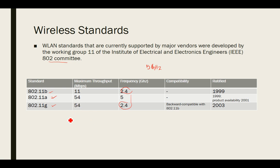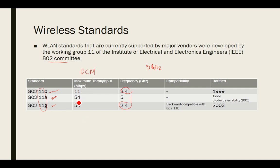The 802.11a standard suffers less from interference, but its use is restricted to almost line-of-sight, requiring installation of more access points than 802.11b to cover the same area. The medium access method for 802.11 standards is called the Distributed Coordination Function, which is similar to the CSMA/CD mechanism of Ethernet.